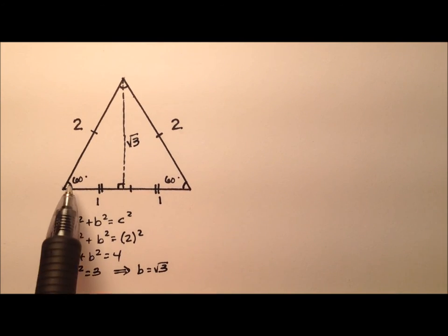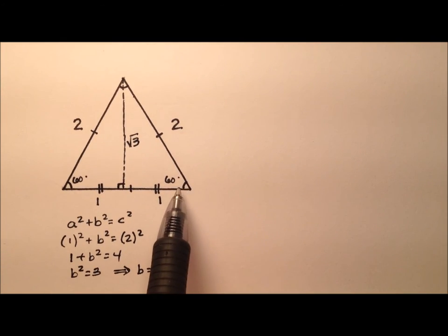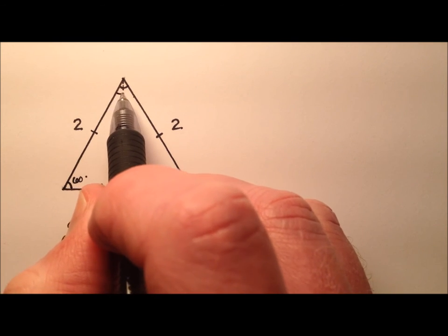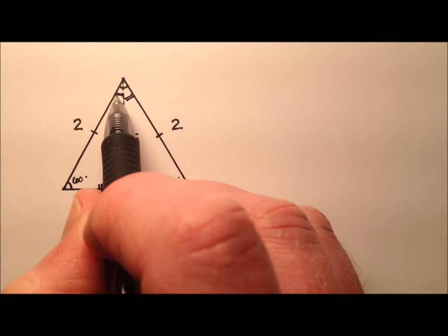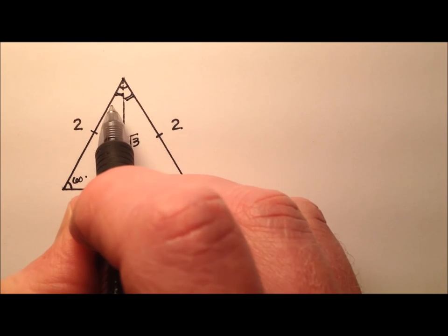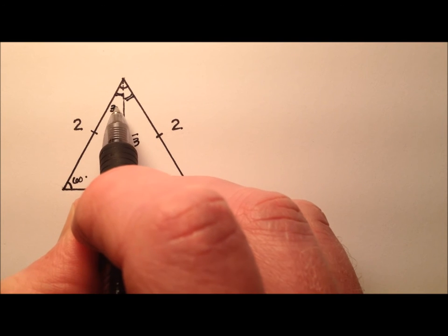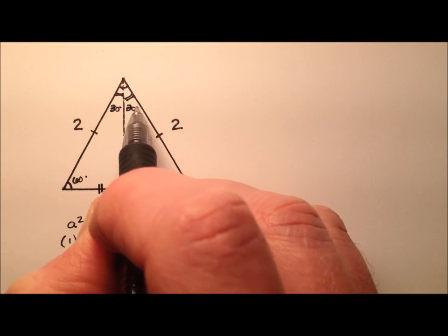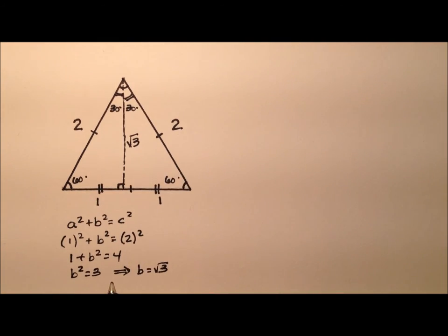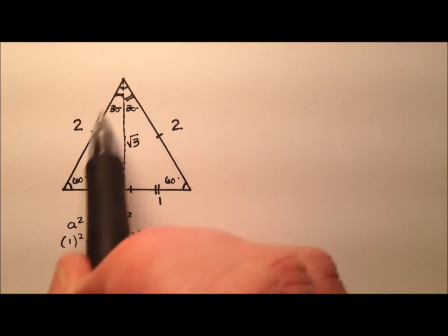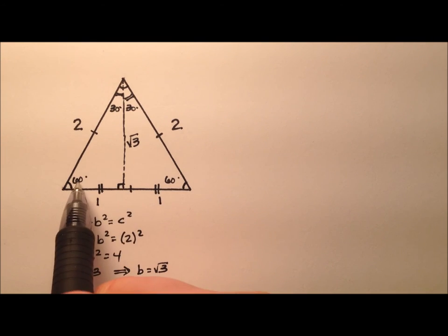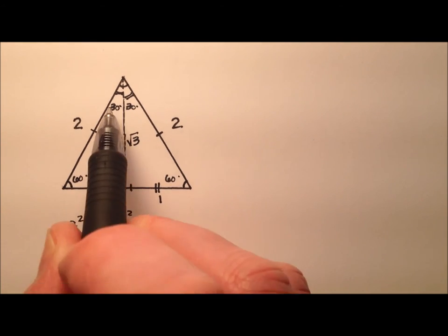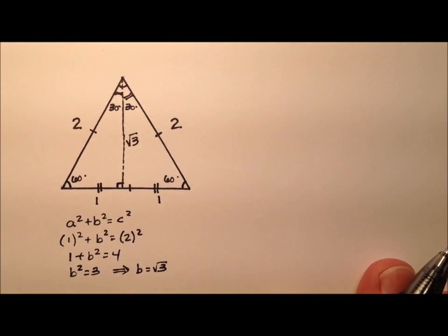We have everything we need. These two bottom angles are the same — they're actually 30 degree angles, because there are 180 degrees in a triangle. Given the right angle of 90 and the top angle of 60, we have 30 degrees left over.